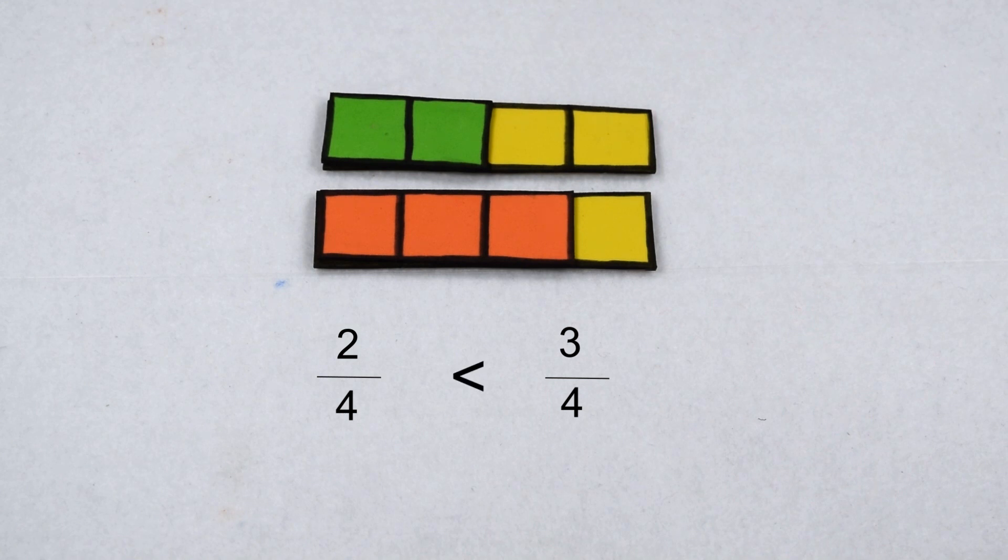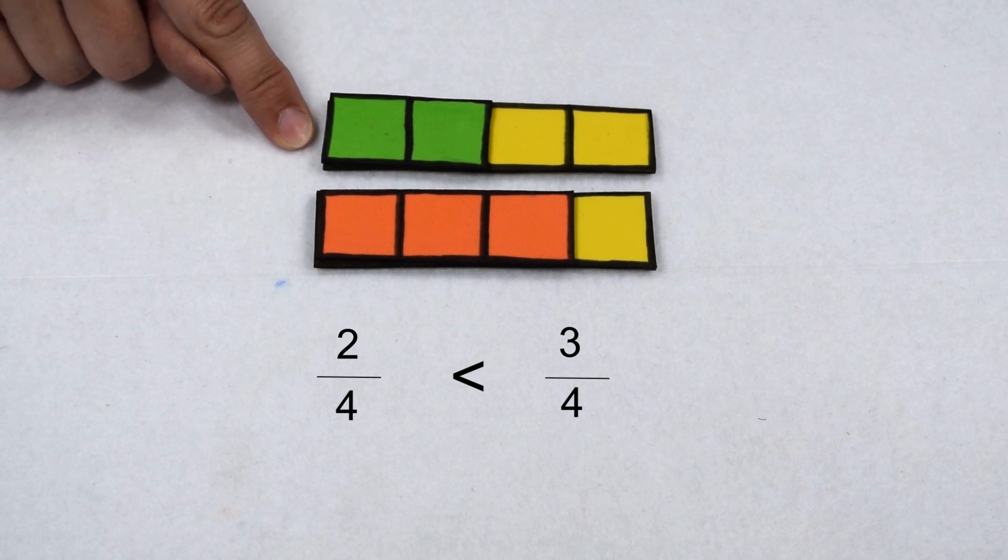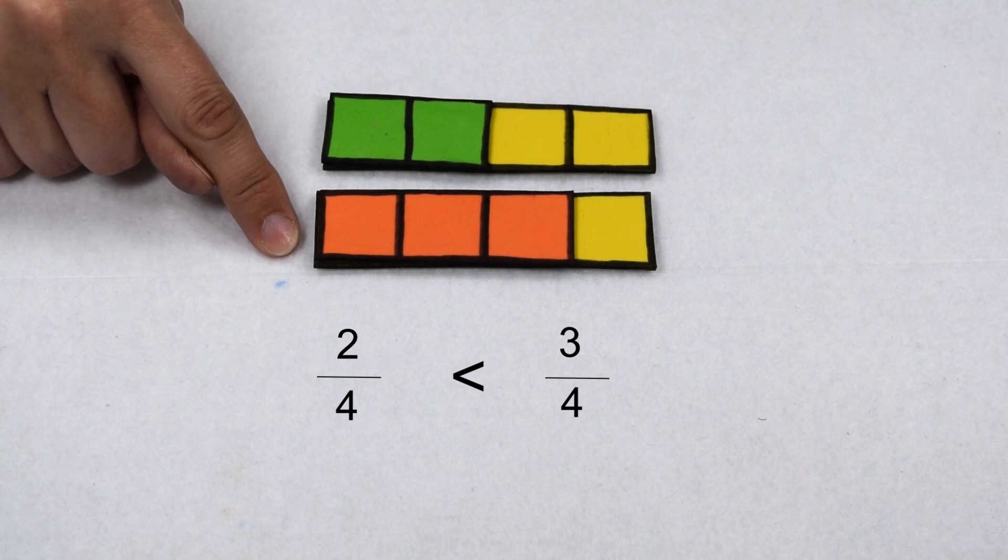In fact, any time we compare fractions with a common denominator, the fraction with the smaller numerator is always going to be less than the fraction with the larger numerator.